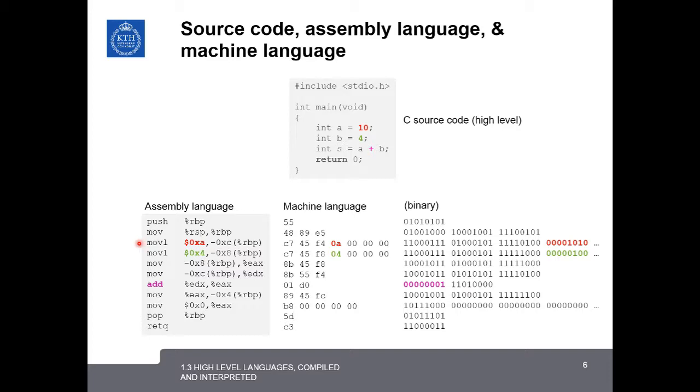In the assembly code, here we can see that first the 10 is moved to a memory address, and then it's moved from the memory address to the register EDX. 4 is also moved to a memory address, and then moved to the register EAX. Then EDX and EAX registers are added, and the result is moved to another memory address.